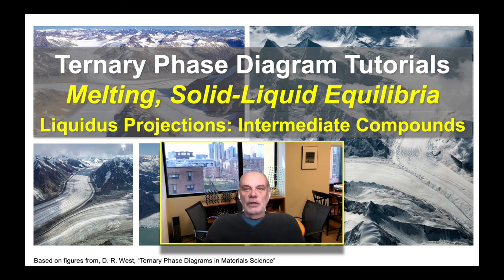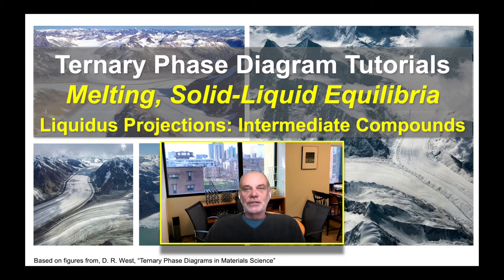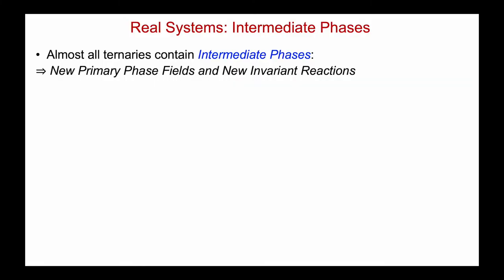Most ternary phase diagrams contain intermediate compounds along the binaries and within the ternary. The presence of those compounds can make the liquidus projection look very intimidating. The purpose of this video is to remove that intimidation and get you to where you can interpret the phase diagram in a confident and reliable fashion. Most real systems contain intermediate phases, and so now we should look at how those start to make the phase diagram look a little bit more intimidating.